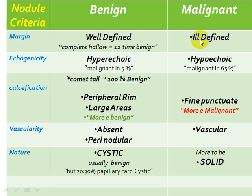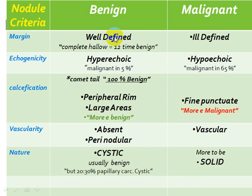Next, E — Echogenicity. In general, benign nodules of the thyroid are hyperechoic. Only 5% of hyperechoic nodules are malignant, meaning 95% of hyperechoic nodules are benign. While malignant nodules in terms of echogenicity will be hypoechoic — 65% of hypoechoic nodules will be malignant.